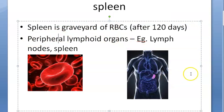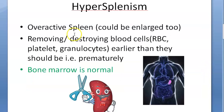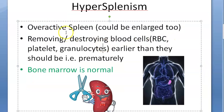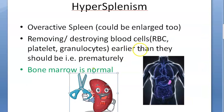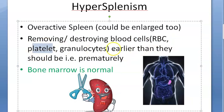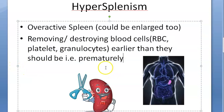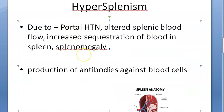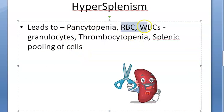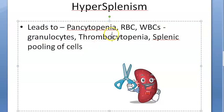In an overactive spleen, it will remove these cells prematurely. It can not only destroy RBCs, but also platelets and WBCs prematurely. These people will land up with pancytopenia — RBCs will be less, WBCs will be less, granulocytes will be less (that is neutrophils, basophils, eosinophils, monocytes), and platelets will also be less.